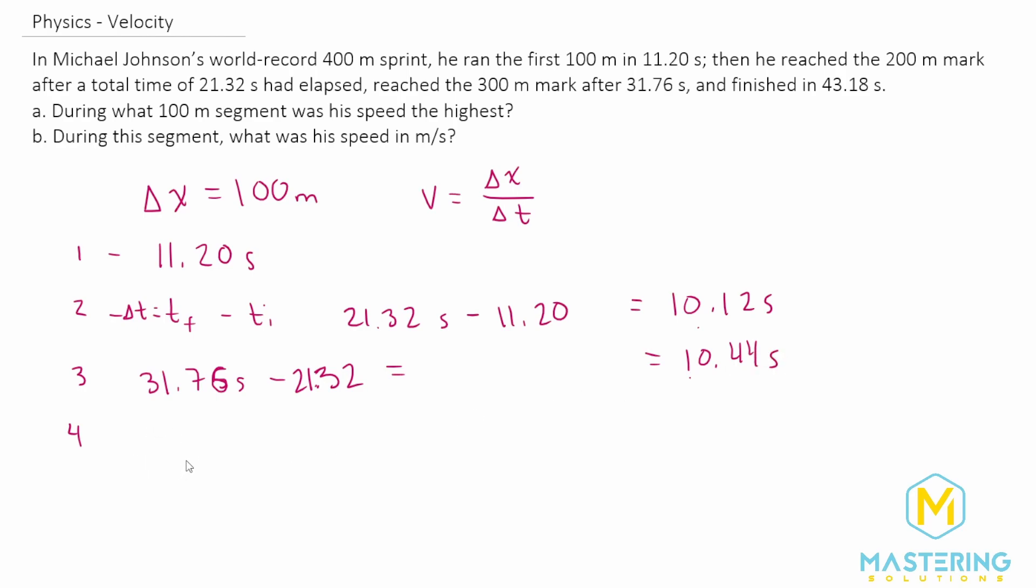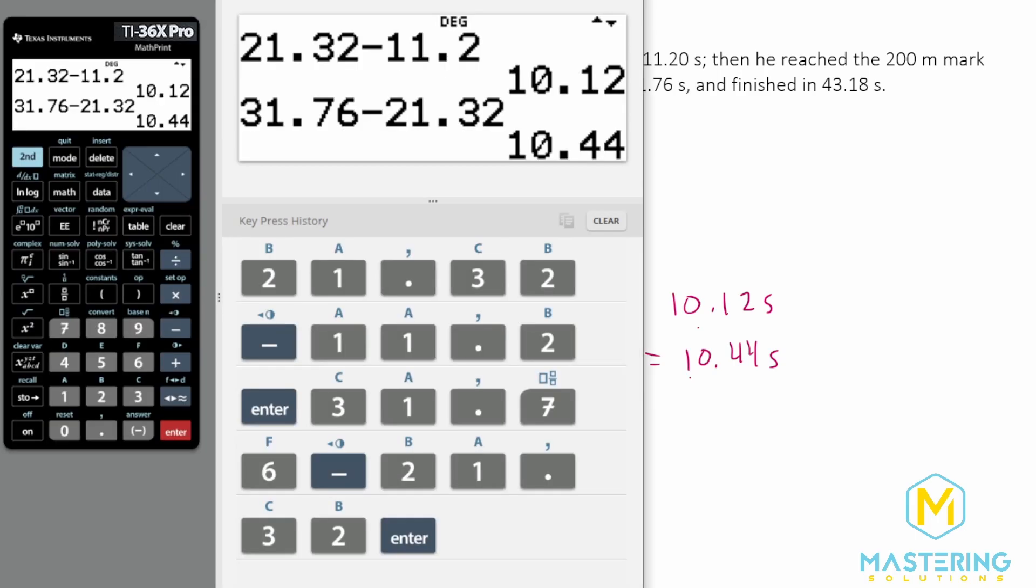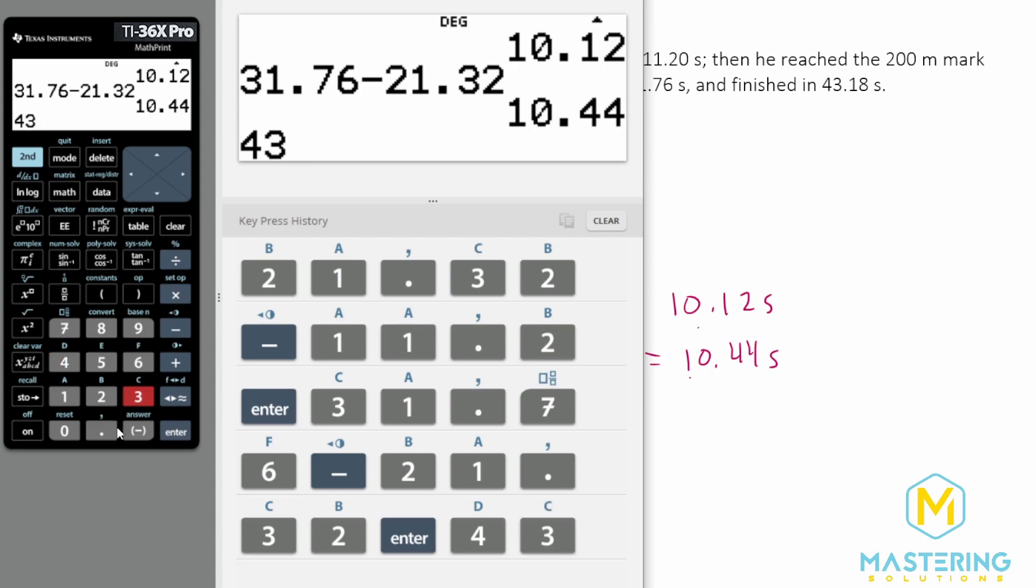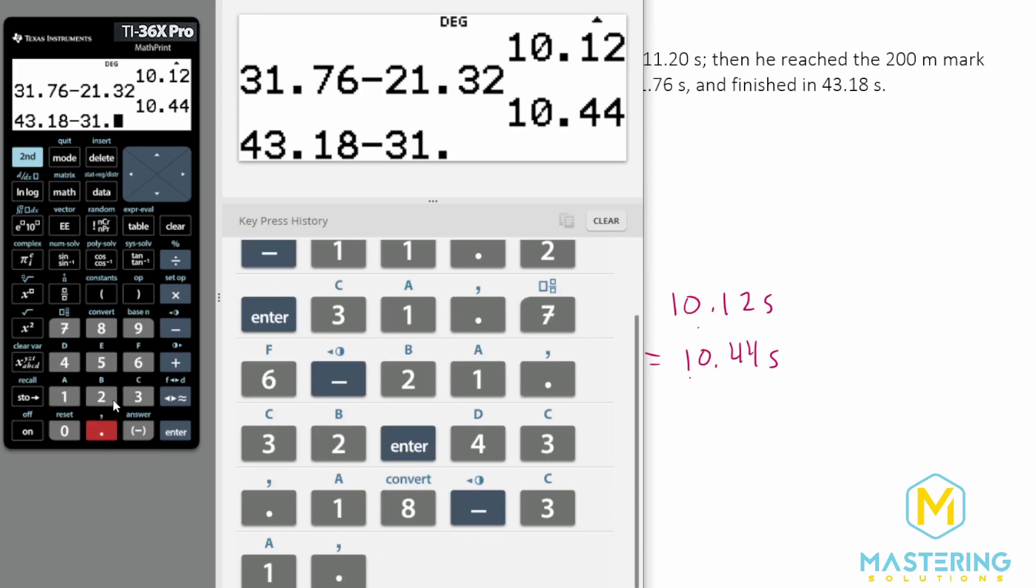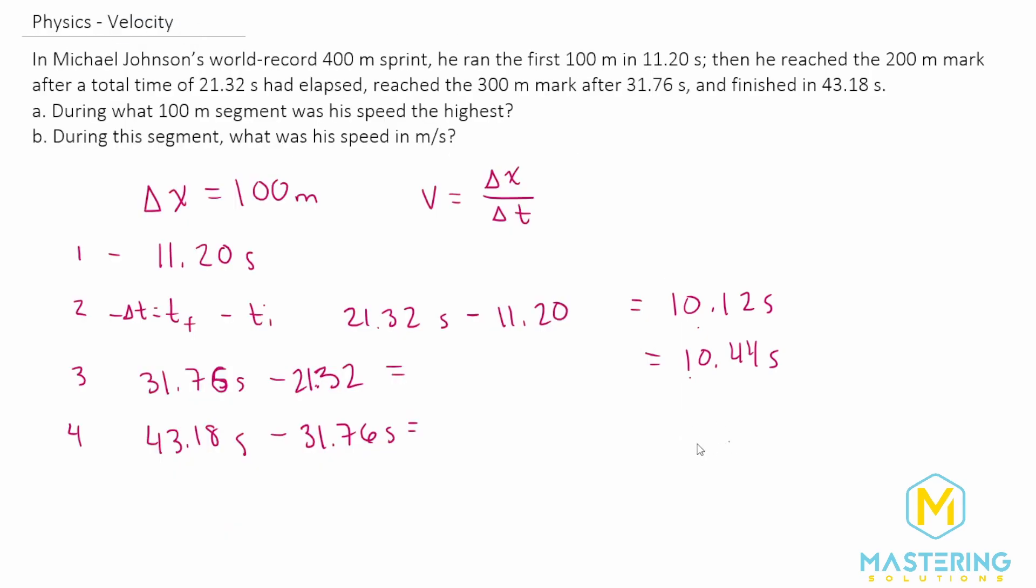And then for number four they say that he finishes at 43.18 seconds and then we're going to minus where he started out for that 100 meter section at 31.76 seconds. 43.18 minus 31.76 gives us 11.42 seconds.